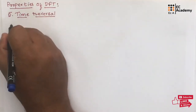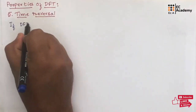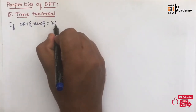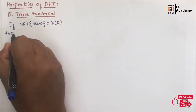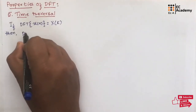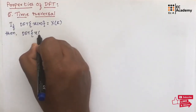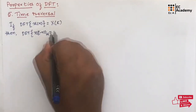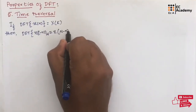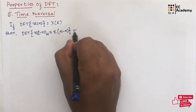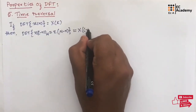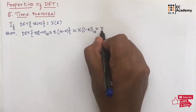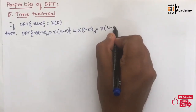Let us write the statement first. If DFT of x(n) is equal to X(k), then we can write DFT of x(-n mod N) which will be equal to X(-n mod N), equal to X(-k mod N), that can be written as X(N-k).